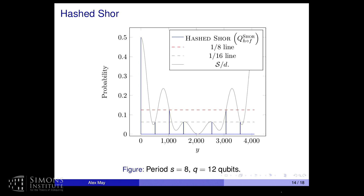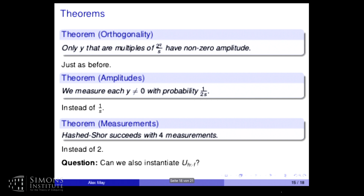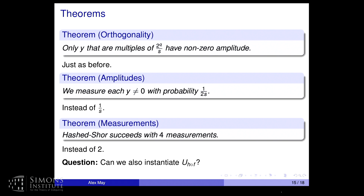The theorems for the hashed Shor case are analogous to the Simon case: the same peaks appear with non-zero amplitude, and for all non-zero vectors we lose a factor of two. Measurements increase by a factor of two, but measurements are not costly in quantum algorithms — we can do thousands per second. What is costly is qubits. So can we play the same trick as with Simon's and find a real-world implementation for the function a^x mod N?